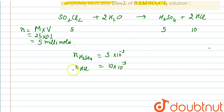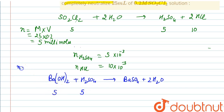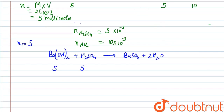For the first neutralization: Ba(OH)₂ + H₂SO₄ → BaSO₄ + 2H₂O. This is the balanced equation. We have 5 millimoles of H₂SO₄. According to stoichiometry (1:1 ratio), 5 millimoles of H₂SO₄ requires 5 millimoles of Ba(OH)₂.